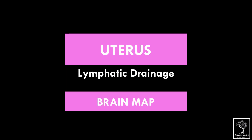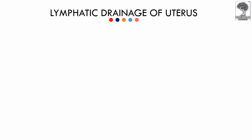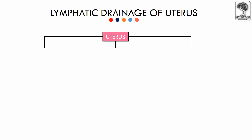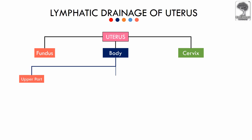Hello and welcome to Brain Map Anatomy. Welcome to the new Brain Map video on lymphatic drainage of the uterus. The uterus is divided into three parts: the fundus, the body, and the cervix. For the sake of learning the lymphatic drainage easily, we divide the body again into upper and lower parts.